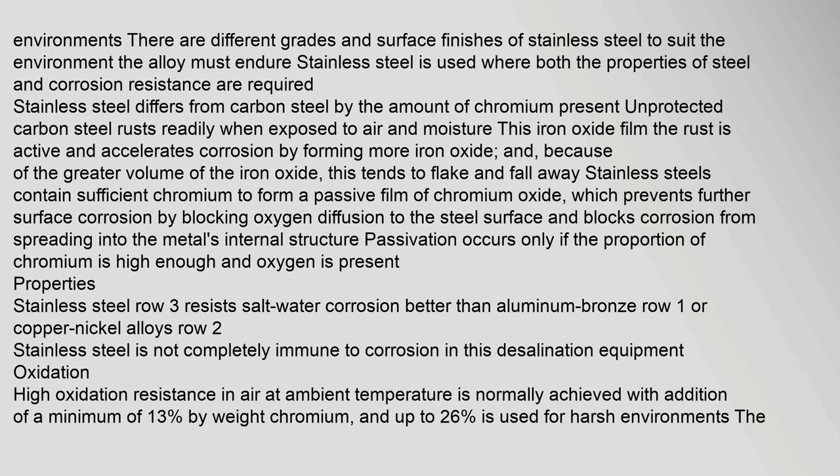Stainless steel differs from carbon steel by the amount of chromium present. Unprotected carbon steel rusts readily when exposed to air and moisture. This iron oxide film (rust) is active and accelerates corrosion by forming more iron oxide, and because of the greater volume of iron oxide, it tends to flake and fall away. Stainless steels contain sufficient chromium to form a passive film of chromium oxide, which prevents further surface corrosion by blocking oxygen diffusion to the steel surface and blocking corrosion from spreading into the metal's internal structure. Passivation occurs only if the proportion of chromium is high enough and oxygen is present.